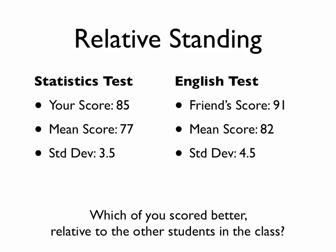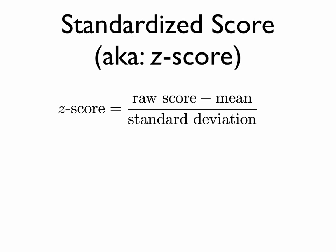Rather than saying that over and over, there's a faster, more concise way of expressing the number of standard deviations above or below the mean — and that's a standardized score, or a z-score. To calculate a z-score, you take the individual raw score, subtract the mean, and divide by the standard deviation.